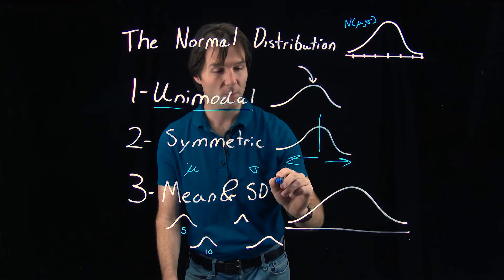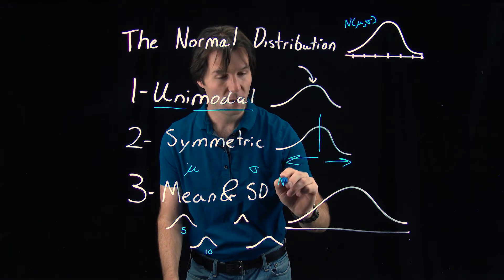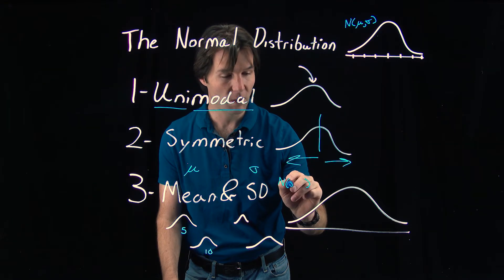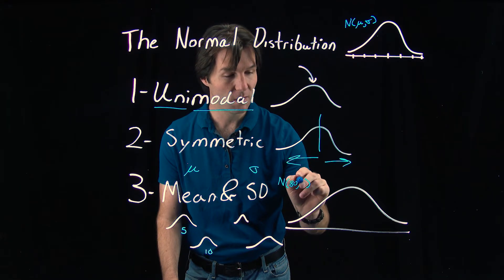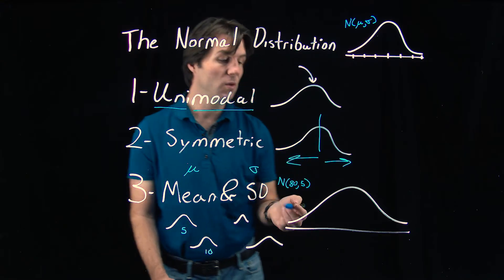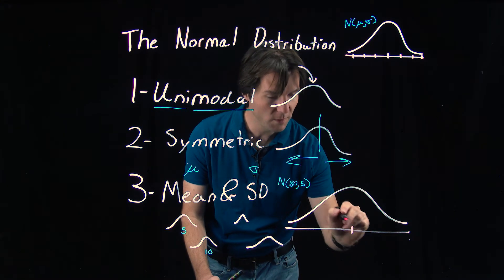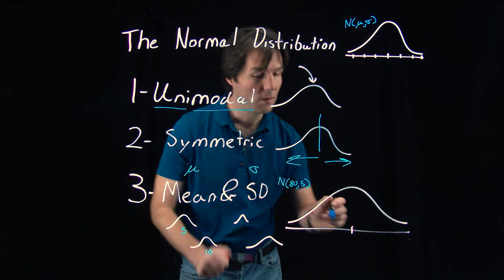You'll notice at the top, we've already listed the normal curve has a mean and a standard deviation. Well, your problem might say that it has a mean of 80 and a standard deviation of 5. If these were the numbers in your problem, you can go right here to the very center of the curve, and right there, you can put